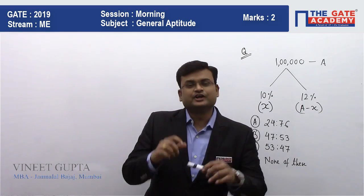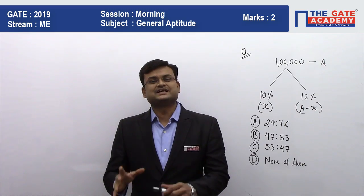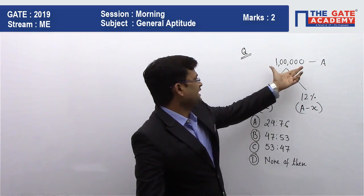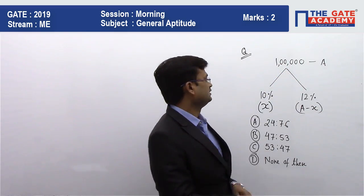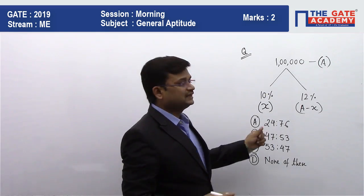In this video, we'll be solving a question of general aptitude from the percentage chapter. So the question says that a person is having one lakh rupees. Assume it to be A, for example.